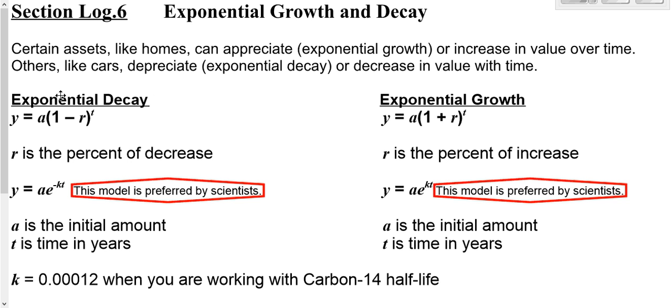When you're looking at exponential decay, you're either going to use y = a(1 - r)^t, or you're going to use y = ae^(-kt). Y is the amount left. A is your initial amount.